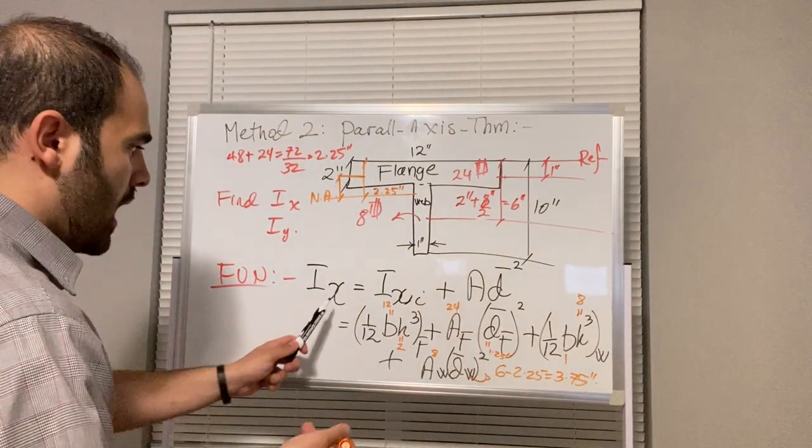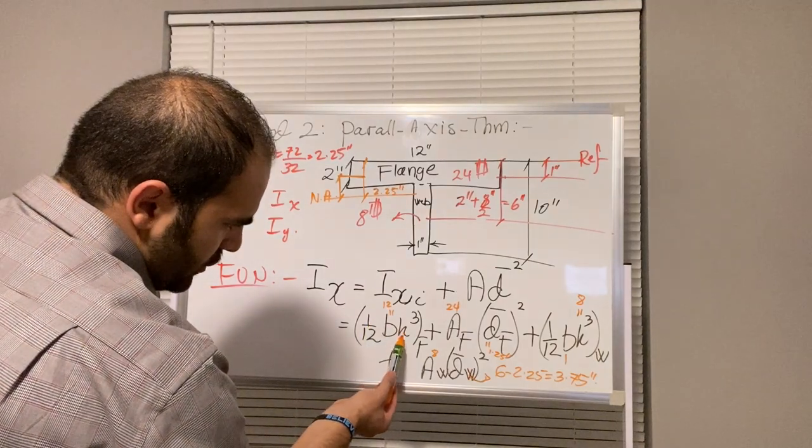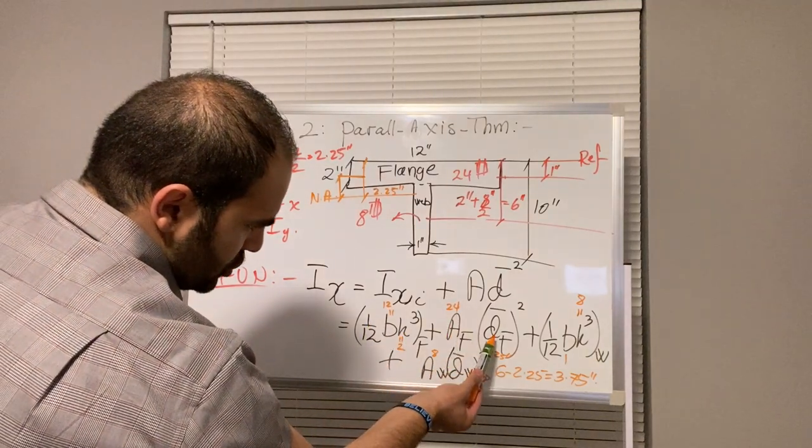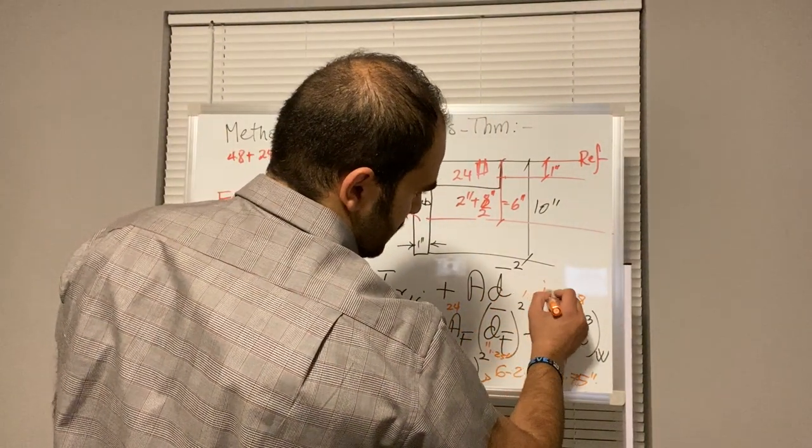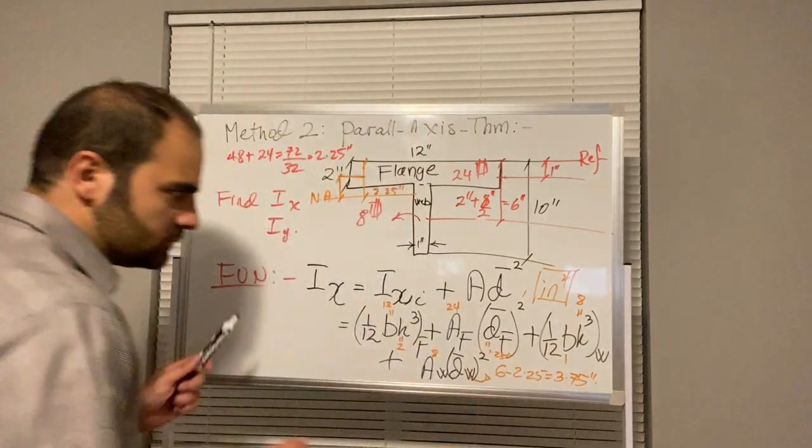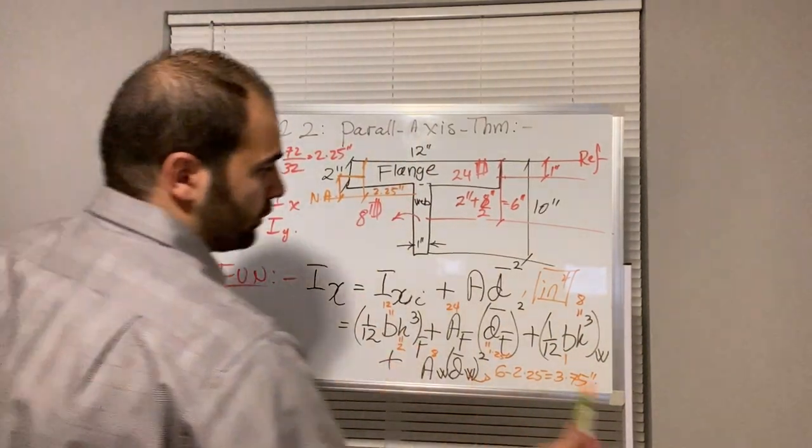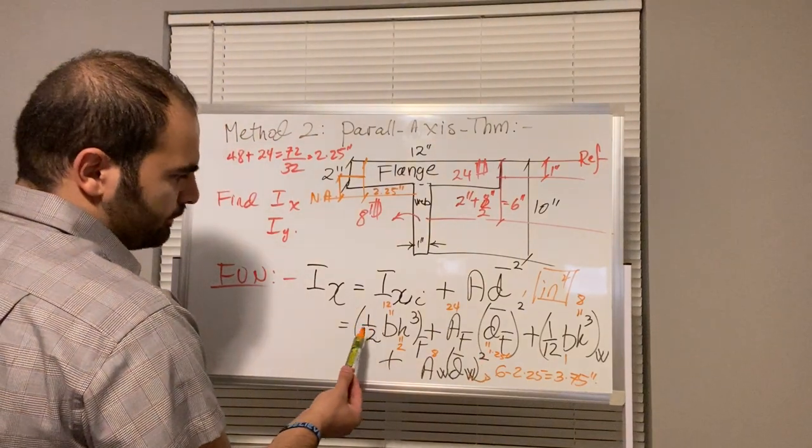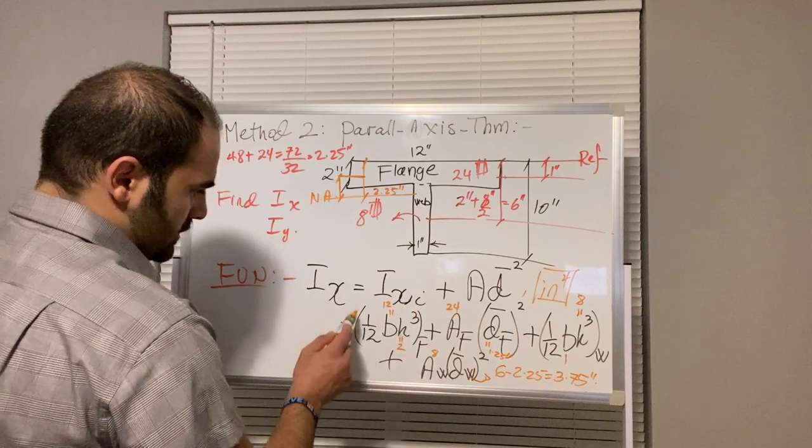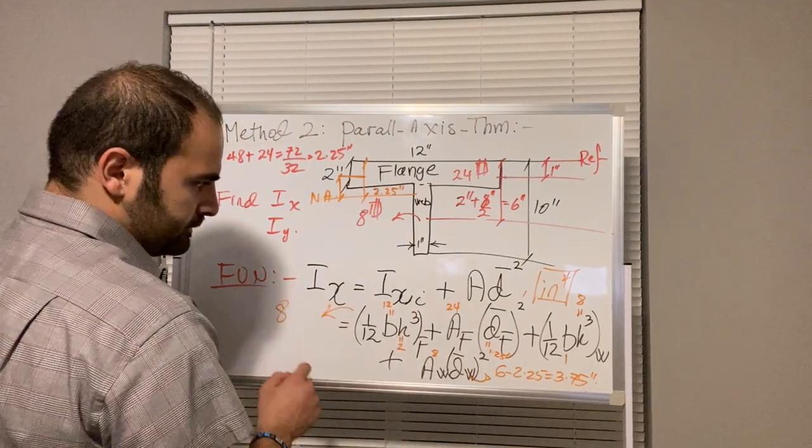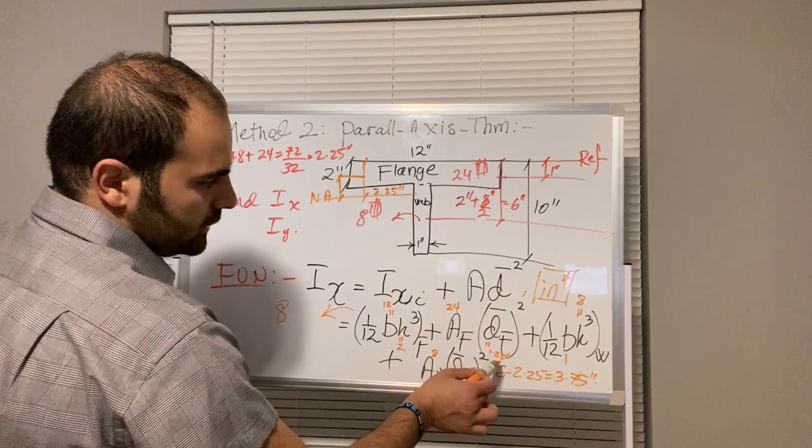Crunch numbers. Boom. Got IX. What is the unit? Inch to the third, inch squared, inch squared. So we are going to be getting this in terms of inch to the fourth. So I know that some of you would like to see the whole process, but it's pretty simple. 1 over 12 times 12, 12 plus 12 cancel out. 2 to the third, so this is 8. This term is 8.